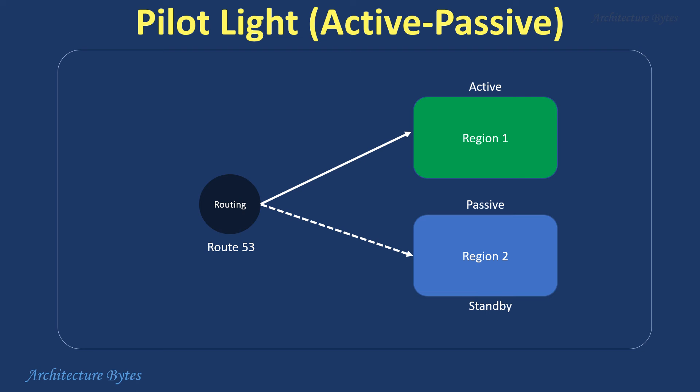Pilot light: maintain a minimal version of your application in a standby state in another region. Scale up resources as needed in case of a disaster. Use AWS CloudFormation for automated infrastructure provisioning.